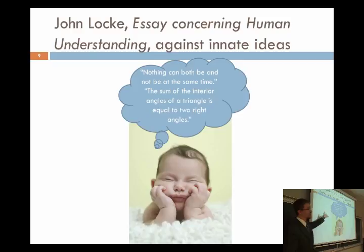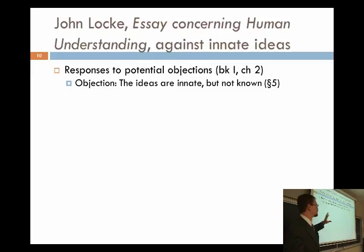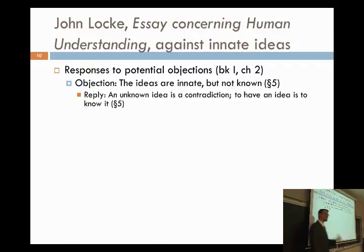The rest of Book 1, Chapter 2 is essentially Locke answering objections to this line of reasoning. One objection: the ideas are innate in the children, they're just not known to the children yet - as they grow up, they get in contact with those ideas implanted in their mind from birth. Locke says this idea is just completely contradictory. An unknown idea is a contradiction - to have an idea is to know it. You can't say you've got ideas but you don't know what they are.